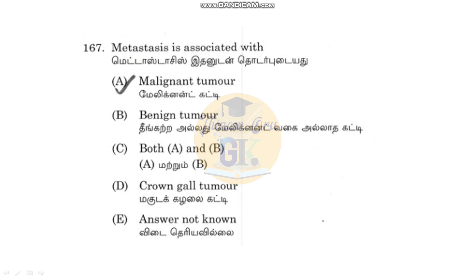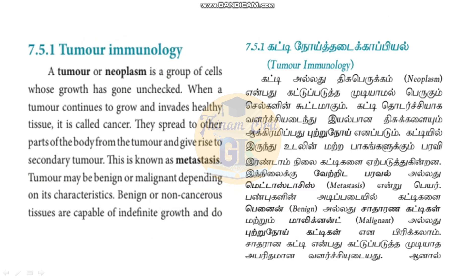Metastasis is associated with malignant tumors. When one cell divides continuously and uncontrollably, that is a tumor. Normally, our cells have programmed cell death called apoptosis. If cells continuously divide without apoptosis, that leads to cancer. The spread of cancer cells to other parts of the body is called Metastasis.